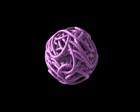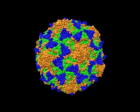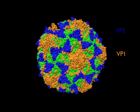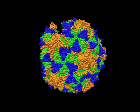This is the poliocapsid at atomic resolution and we can see that it is composed of four structural proteins: VP1, VP2 and VP3 on the outer surface, and VP4, which lies on the inner surface.